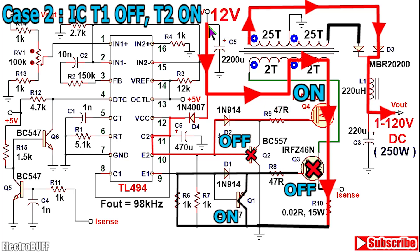When Q4 now conducts, you have a current path flowing from the input positive supply, through the right-hand side of the primary winding as shown, through the MOSFET Q4, through the current sensing resistor R10 and to ground as shown. This is the second half cycle and this will complete one oscillation. Then the process will repeat 98,000 times per second.